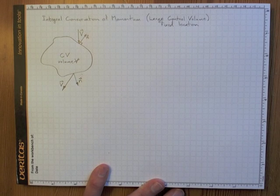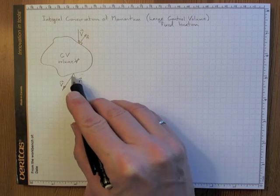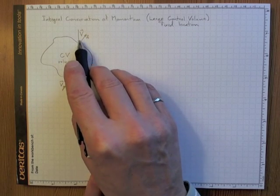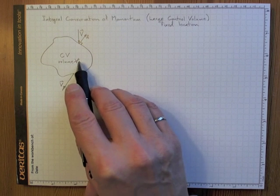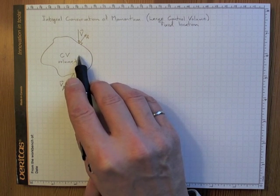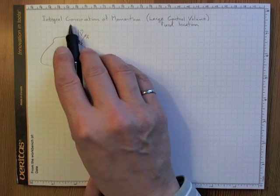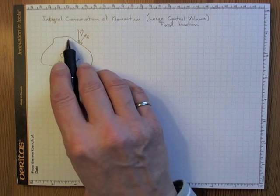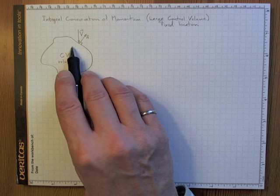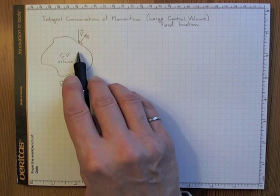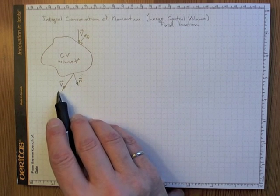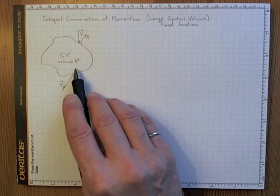Integral conservation of momentum is the principle we use when dealing with a large volume in space that contains fluid which could have a velocity that varies over the region. To conserve momentum over this entire volume, we need to account for what momentum is in the volume, what momentum is coming in, what is going out, and what momentum is being added by applied forces.